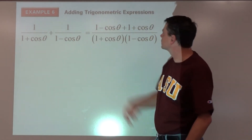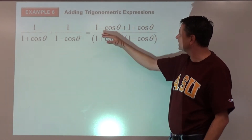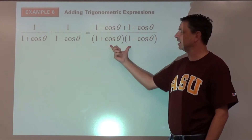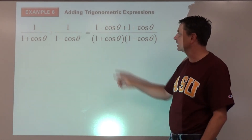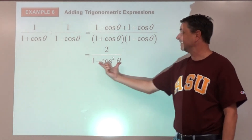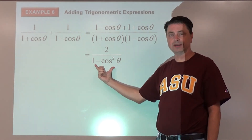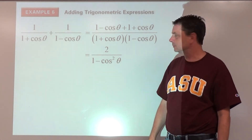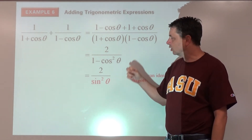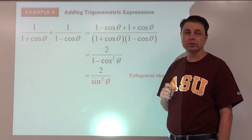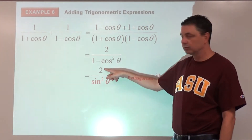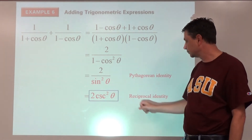Adding the numerators: positive and negative cosine theta cancel, leaving two. In the denominator, multiplying gives a difference of squares: one minus cosine squared theta — which is the Pythagorean identity for sine squared theta. So we get two over sine squared theta, which by the reciprocal identity equals two cosecant squared theta.